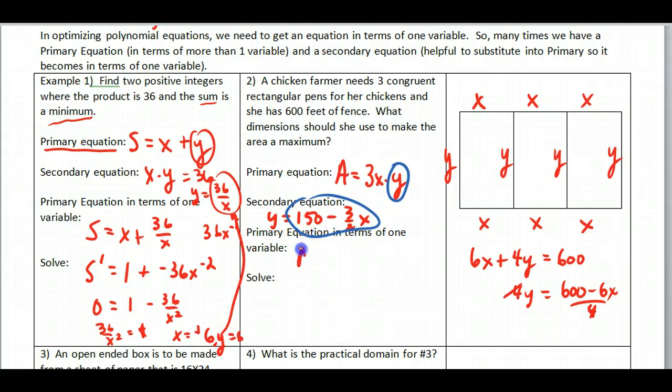So overall I have the area is equal to 3x times 150 minus 3 halves x. So to solve this out, we got to multiply. So I'm going to get 450x, it's the easiest way to do this rather than the product rule, and then minus 9 halves x squared.